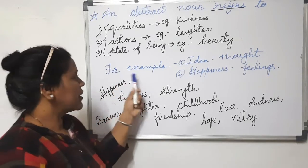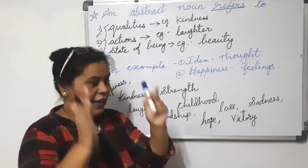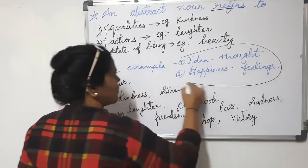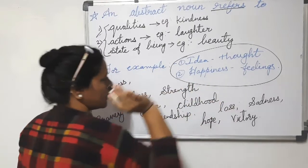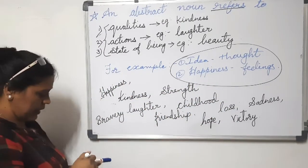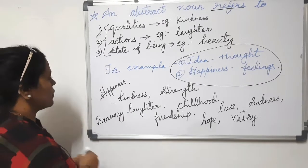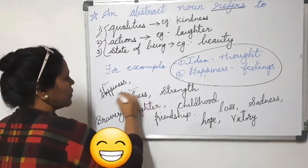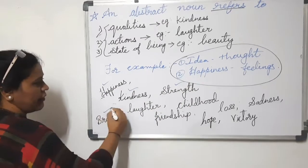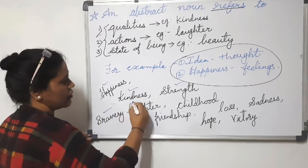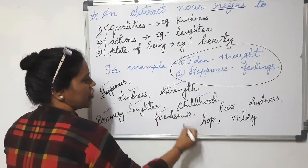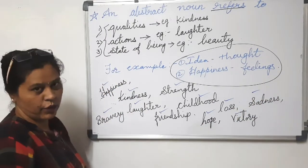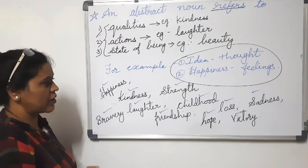For example: idea, thought, and happiness are abstract nouns — they describe ideas, thoughts, and feelings. Some more examples of abstract nouns are: happiness, kindness, strength, bravery, laughter, childhood, friendship, hope, victory, loss, and sadness. There are many more words that refer to abstract nouns.